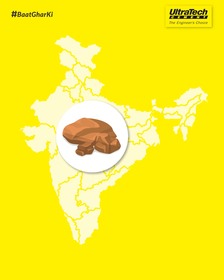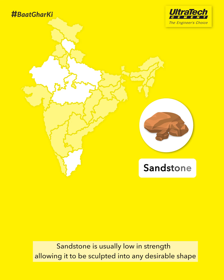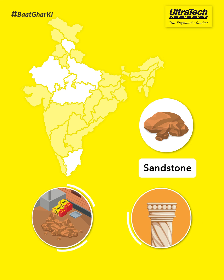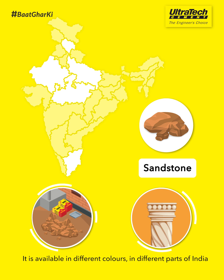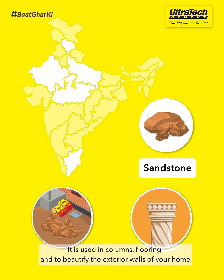Sandstone. Sandstone is usually low in strength, allowing it to be sculpted into any desirable shape. It is available in different colours in different parts of India. It is used in columns, flooring, and to beautify the exterior walls of your home.